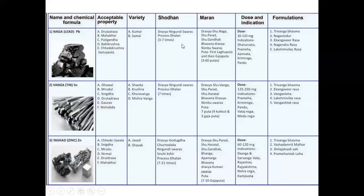For all the Shodhanas of Naga, Vanga, and Yashada, Dhalana is performed — remember the word Dhalana for the purification of these Puti Lohas. For Yashada Marana, the dravyas used are Shuddha Parada, Shuddha Hartaal, Shuddha Gandak, Vanga Bhasma, Apamarga, with Bhavana Dravya of Kumari Swarasa. We give 7 to 10 Agnisanskar Gajaputa.